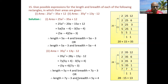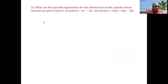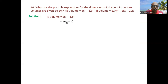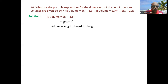Question 16(i): find dimensions of a cuboid with volume=3x²-12x. Taking 3x common: 3x(x-4). Volume = length×breadth×height, so the three dimensions are 3, x, and (x-4).